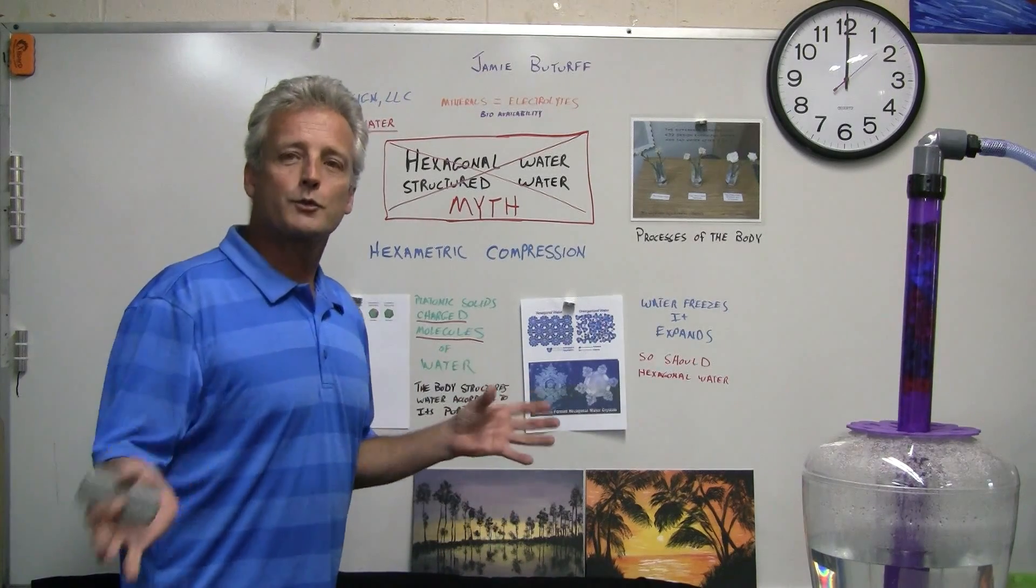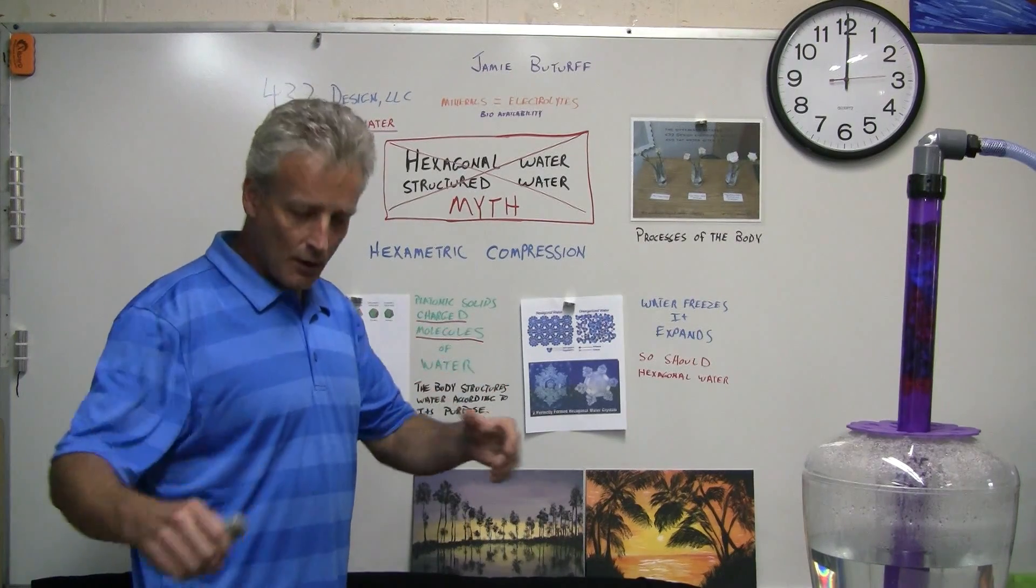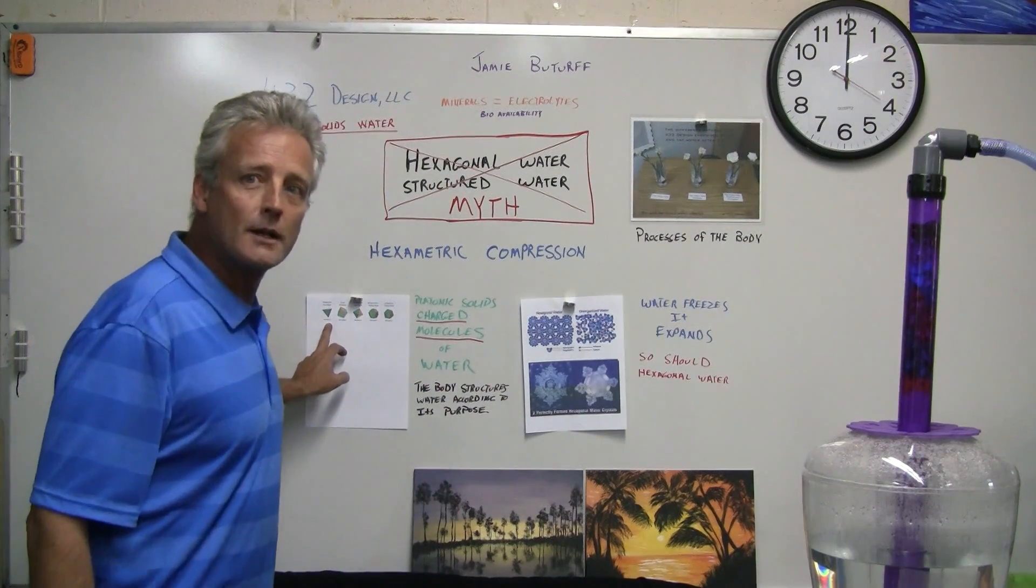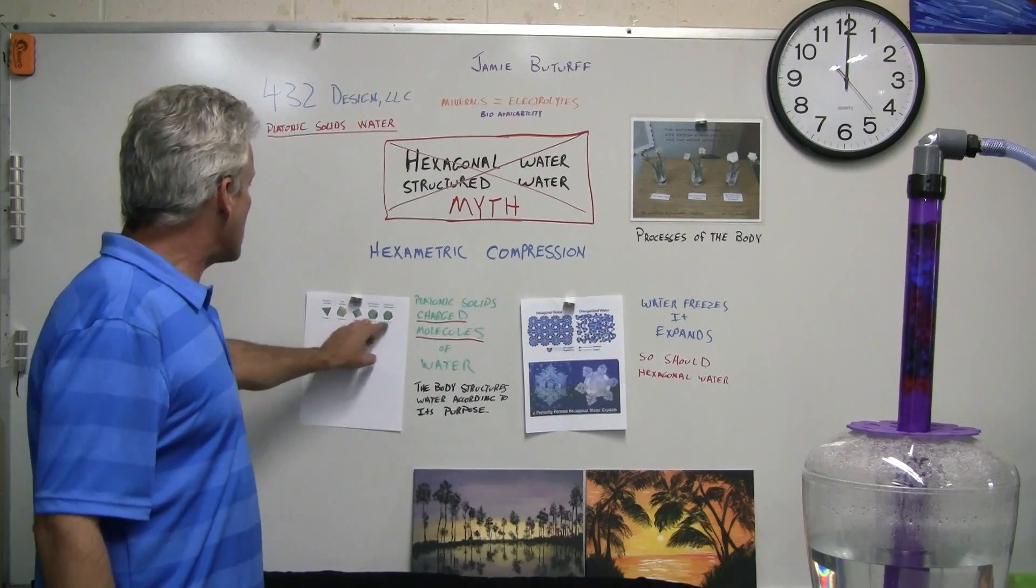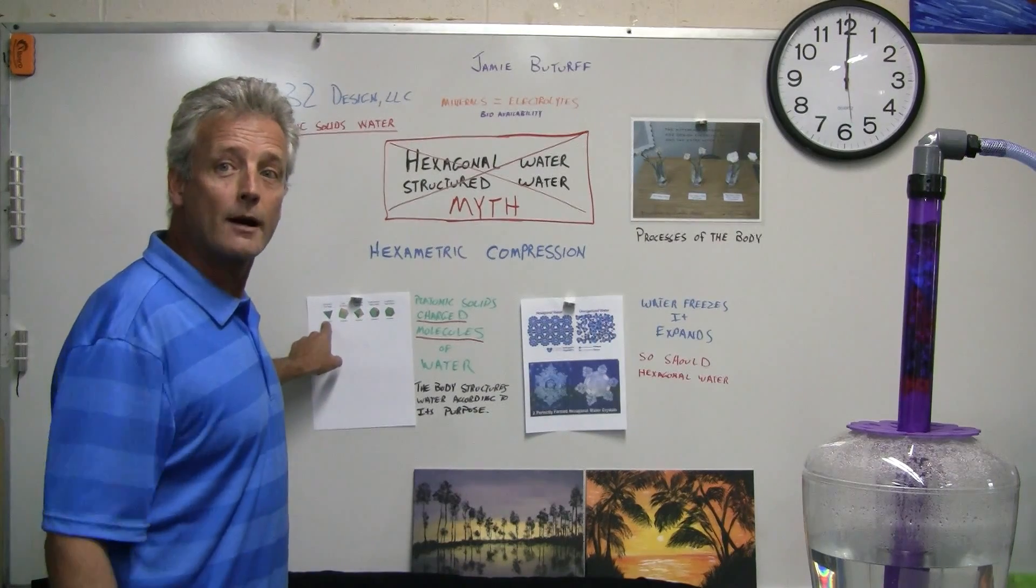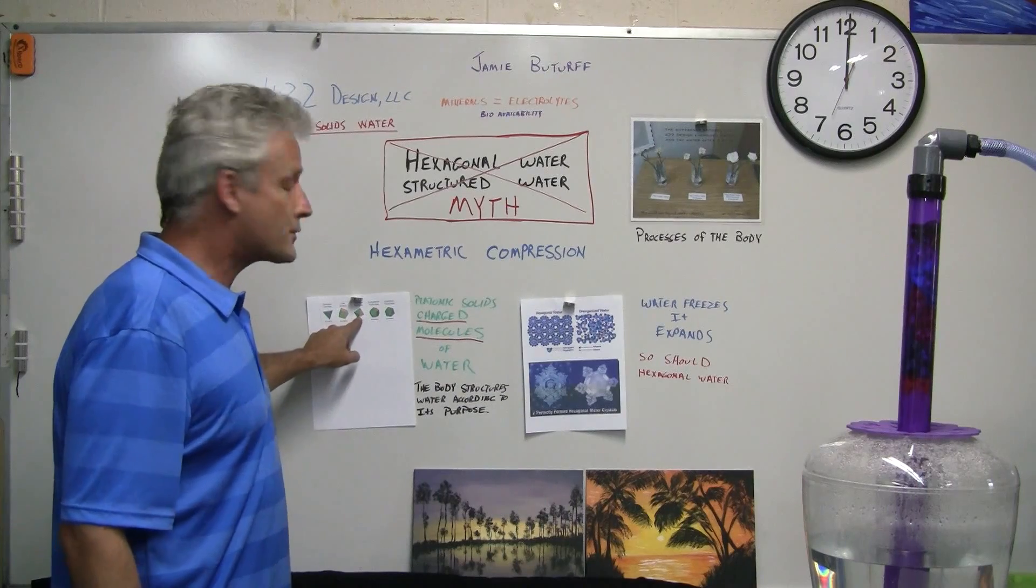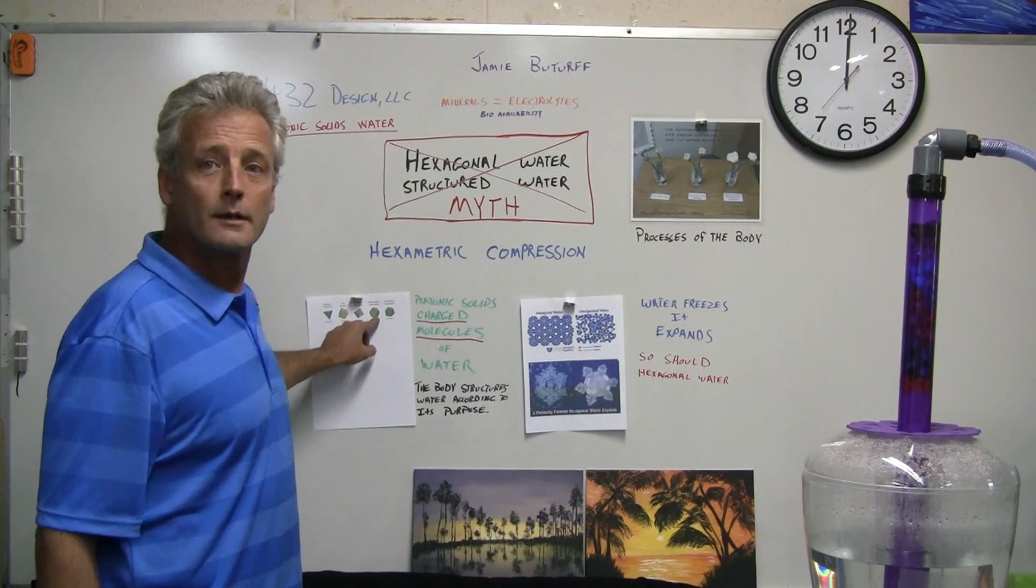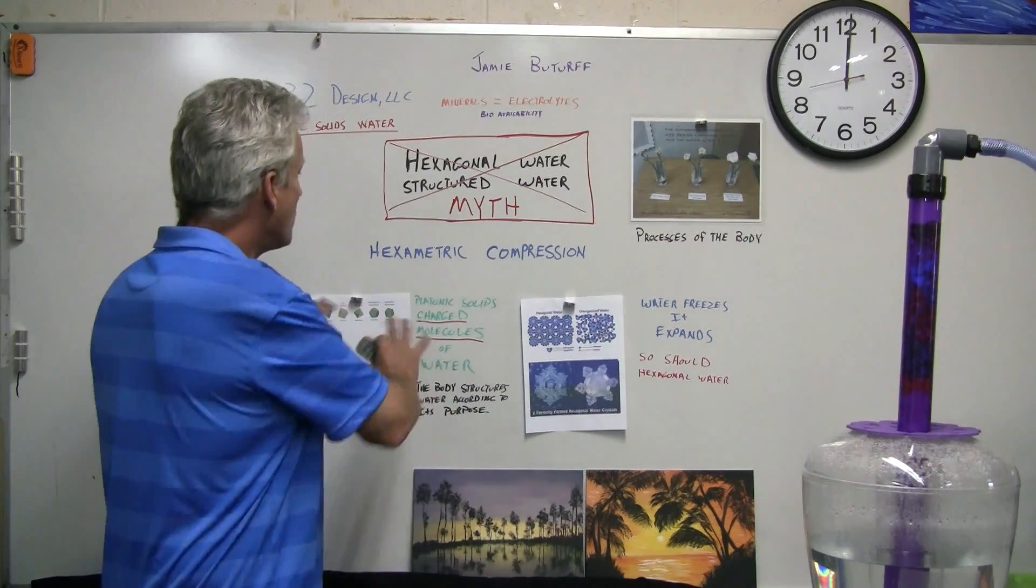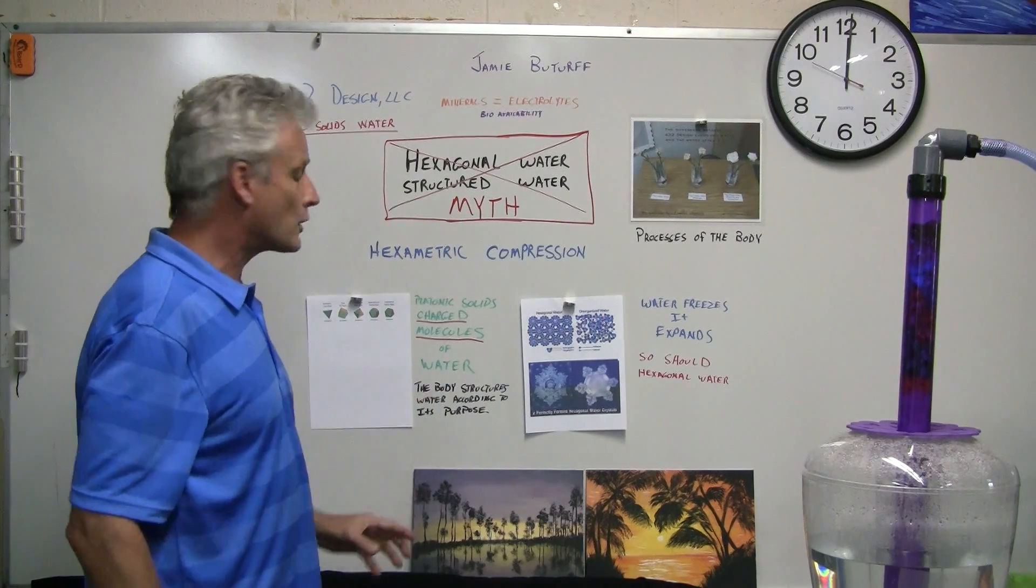When you sweep the floor, you use a broom and a dustpan - you use two different things for one process. Your body does the same thing. When I go back to my platonic solids, you've got five platonic solids. Let's say one of them brings in water or brings in air or oxygen, another structure removes it, another structure brings in nutrients, another structure removes waste. Your body will structure the water according to what it needs. Platonic solids are charged molecules of water, and the body structures the water according to its purpose.